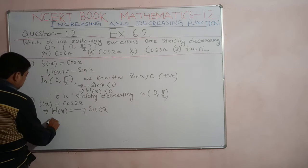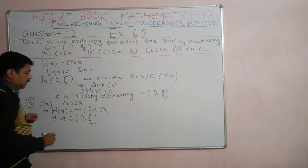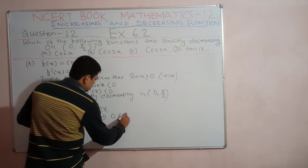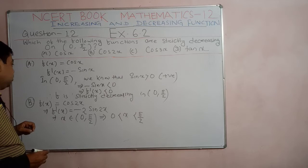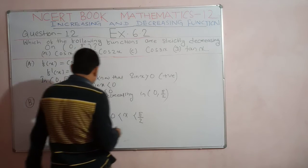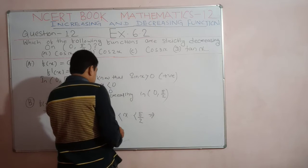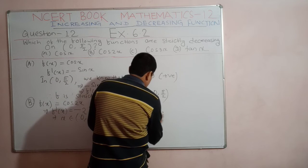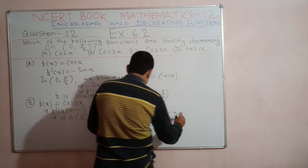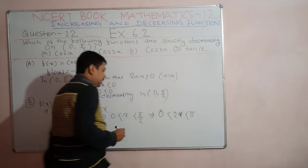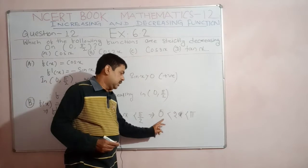Since x belongs to (0, π/2), we have 0 < x < π/2. Here the angle is 2x, so multiply by 2 on both sides: 0 < 2x < π. That means 2x lies between 0 and π.